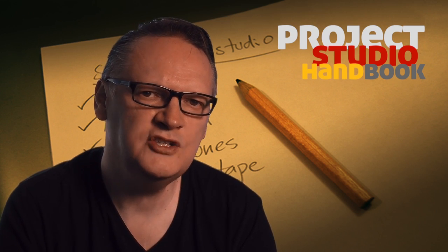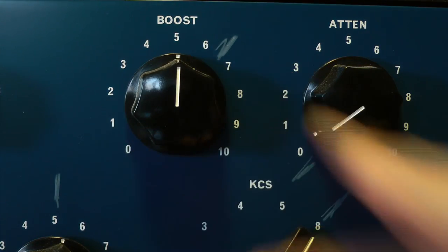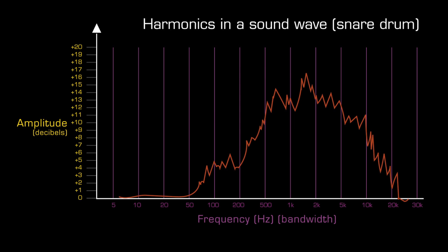Thirdly, to show the range of changes that a device such as an equaliser can make to a sound. And lastly, it is used to show the relative amplitudes of all the harmonics or frequencies in a sound wave.